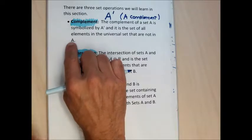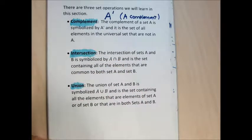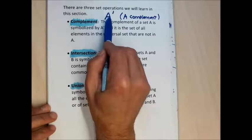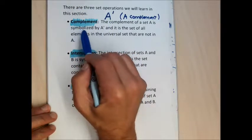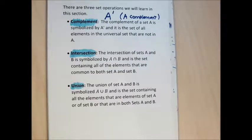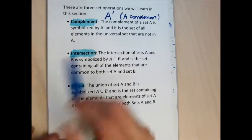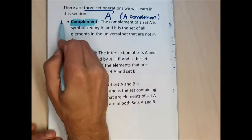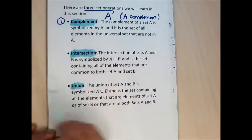A complement is the set of all elements in the universal set that aren't part of set A. The definition itself will make more sense once you already know what a complement is. I kind of need to say the definitions before I do the examples, and then once I do the examples these words will make more sense. There are three different operations we're going to do with sets: complement, intersection, and union.